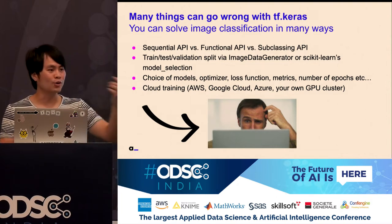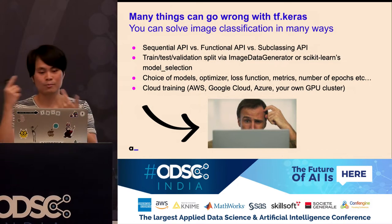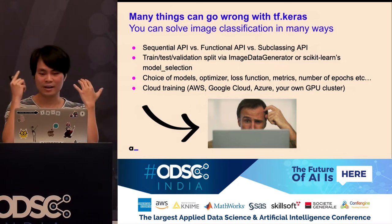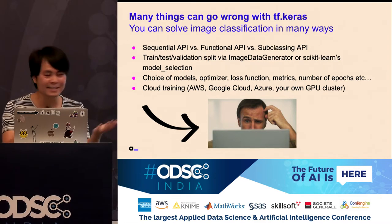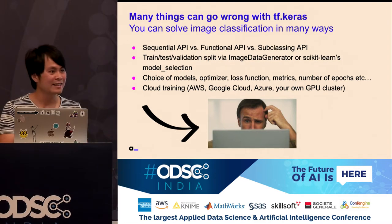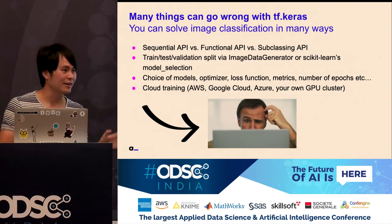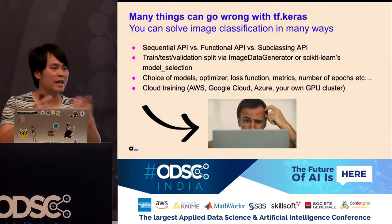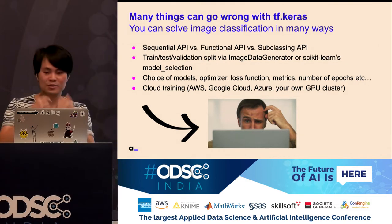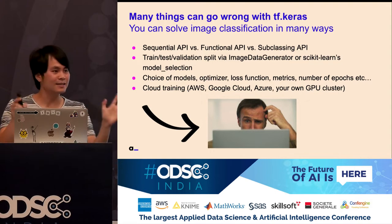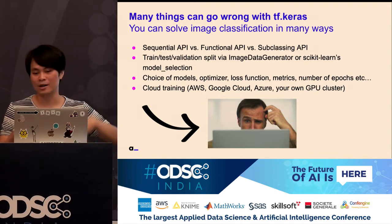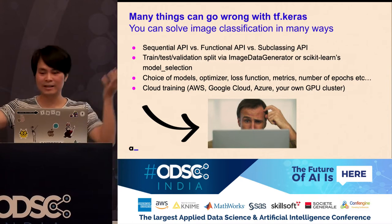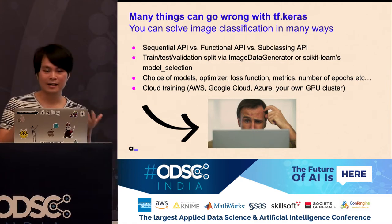For someone who's new to machine learning, all these choices can be overwhelming, especially for software engineers. You also have choices for train/test/validation split — via the image data generator or scikit-learn. Then you choose the model: MobileNet, ResNet, VGG16, VGG19, ResNet152? There are so many out there. And your optimizer: Adam or SGD? Loss function, metrics, number of epochs — 10, 15, 20? For a software engineer seeing all that, it's not easy to understand. And you can train everywhere: your own cluster, Azure, Google Cloud, AWS.